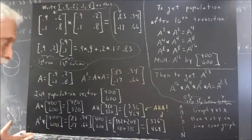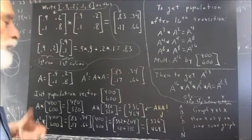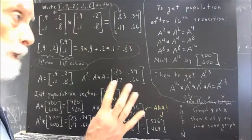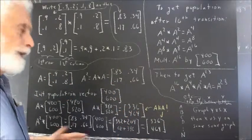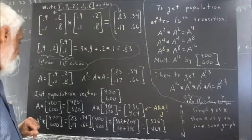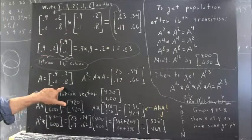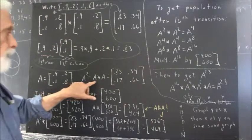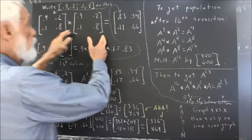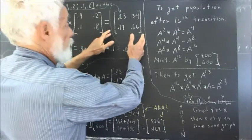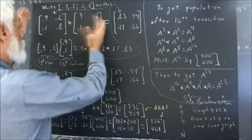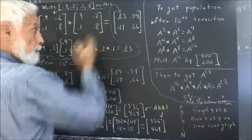We next consider the question of how would we get a Fourier matrix out of this — how could we get a fourth power of the original matrix? Well, if the original matrix is A, then A squared is A times A, and here we have it: A times A is this, which is A squared, so that the A squared matrix contains A times A.